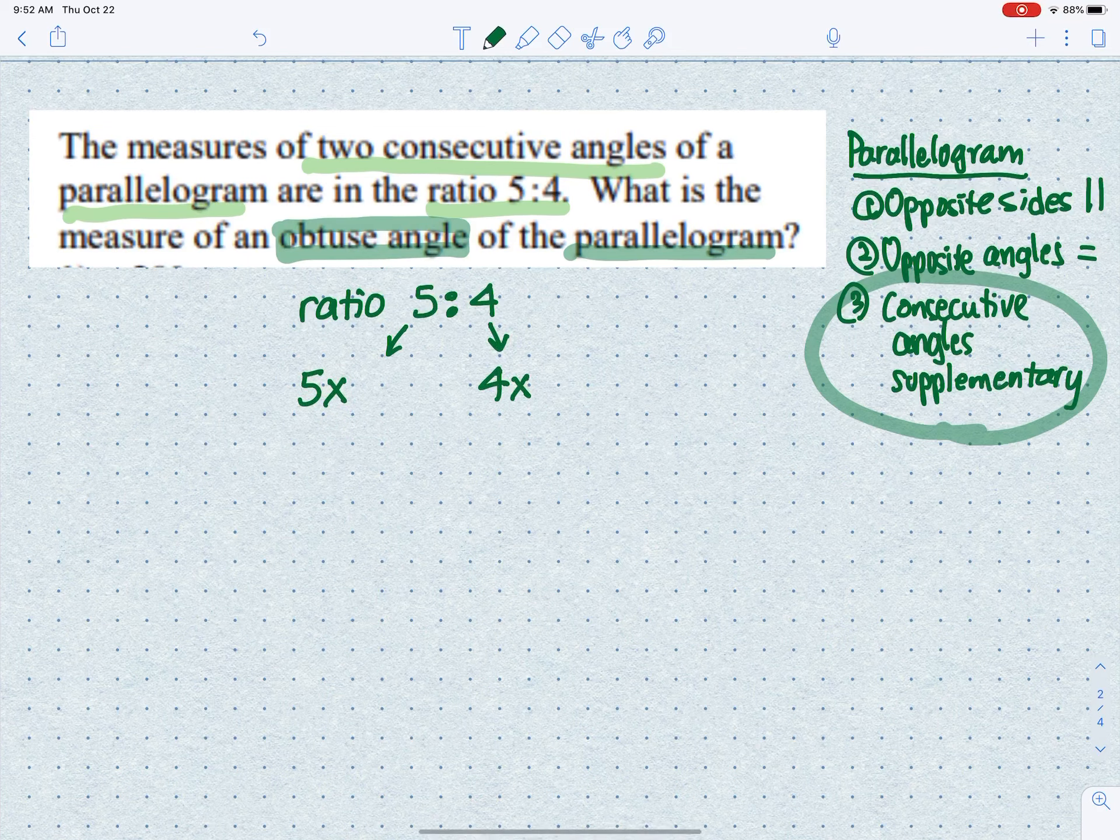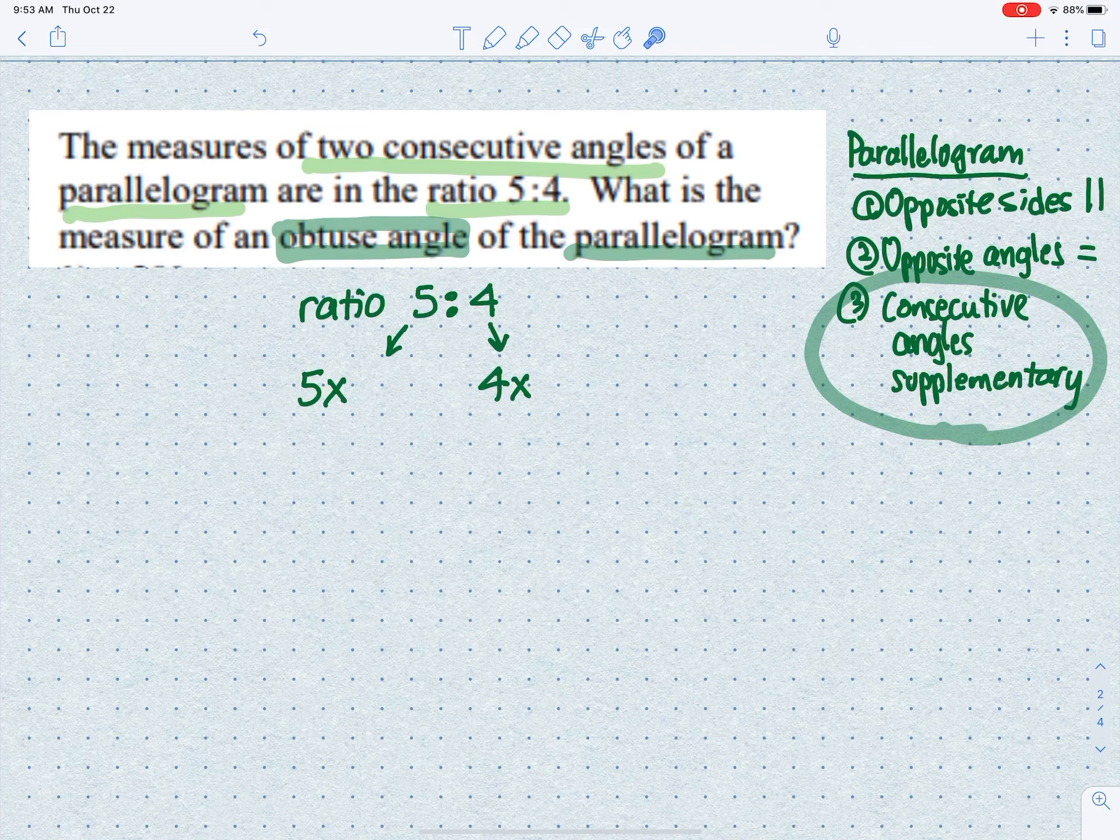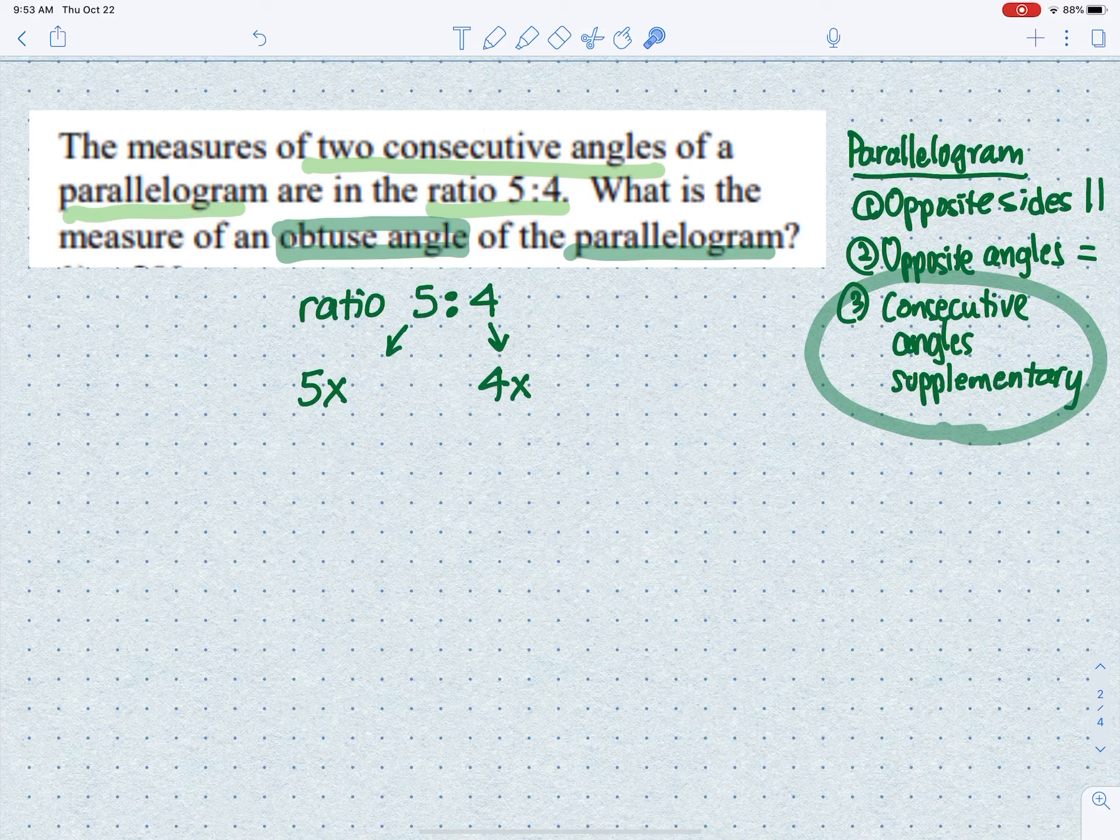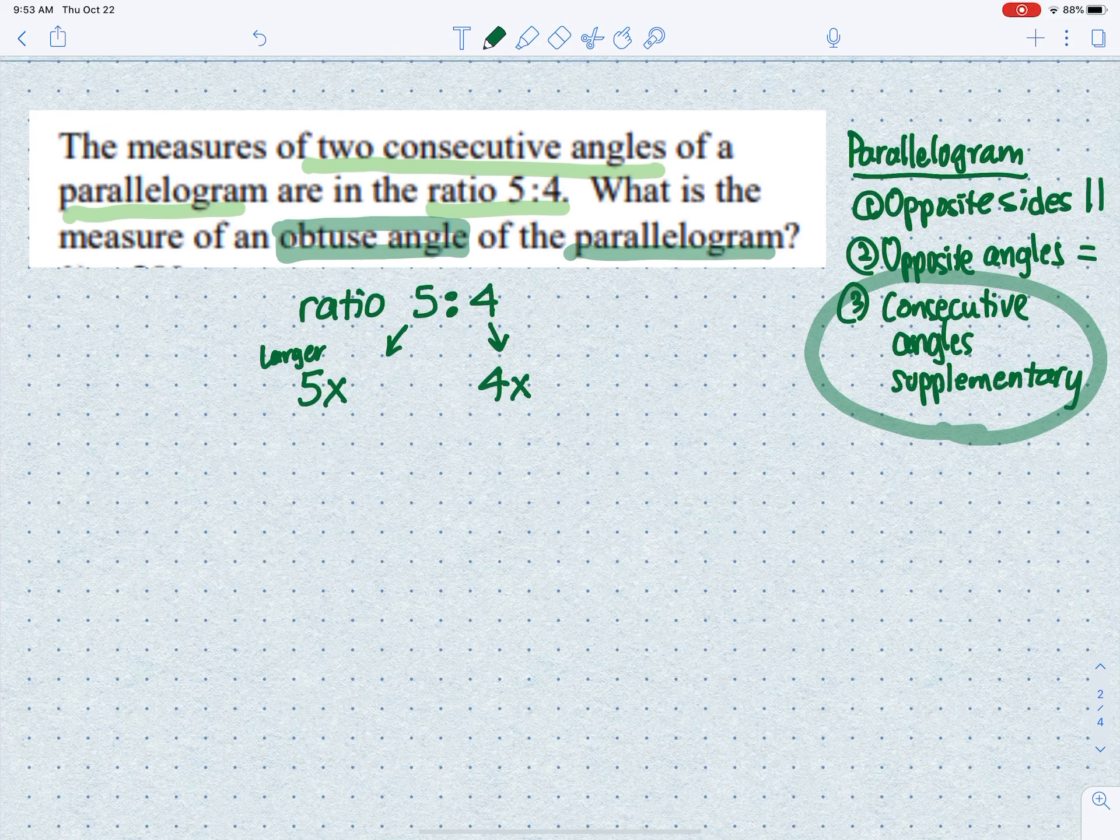These two represent the two consecutive angles. Obviously, 5 is greater than 4, so 5x represents the larger angle and 4x represents the smaller angle.